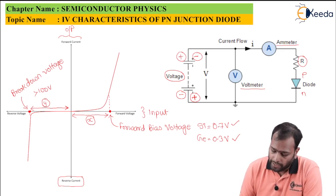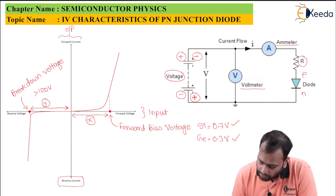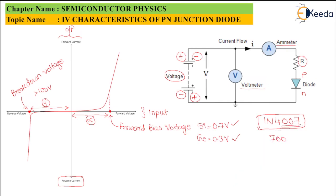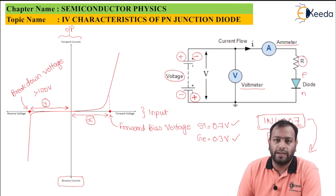A practical tip for reading a diode: diodes are numbered, for example, 1N4007. If you reverse the last three digits — 007 — you get 700, which represents the reverse breakdown voltage of 700 volts. So whenever buying a diode, reverse the last three digits to find the reverse bias breakdown voltage. Exceeding this voltage will blow the diode. The examiner could ask you to read the ratings of various diodes in your practicals.